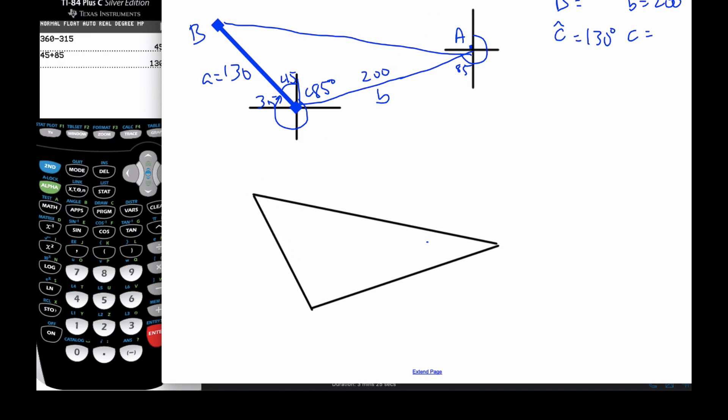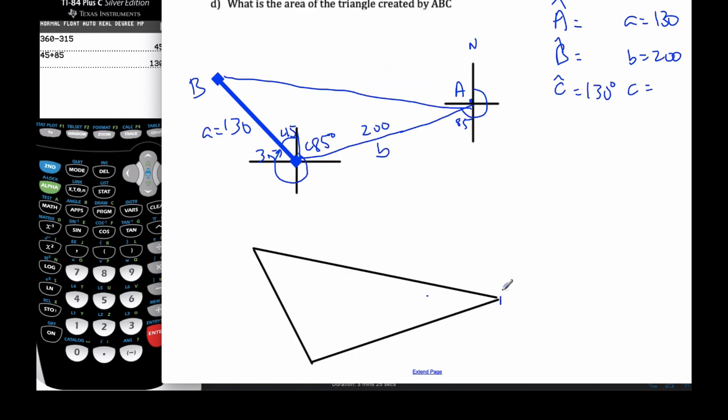And I usually try and make this one relatively neat so I can see what is going on. I figured out that this was 130. This is 130 kilometers. And this is 200 kilometers. And this is 130.